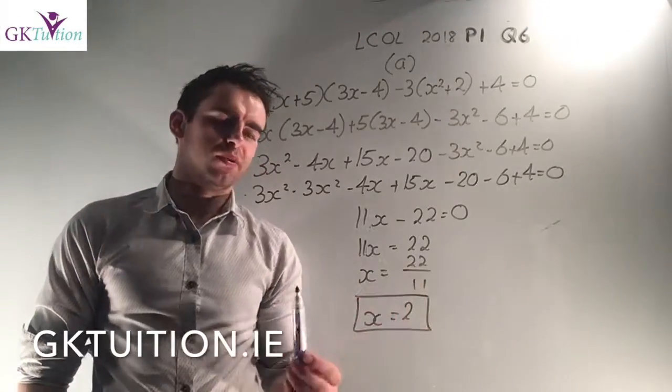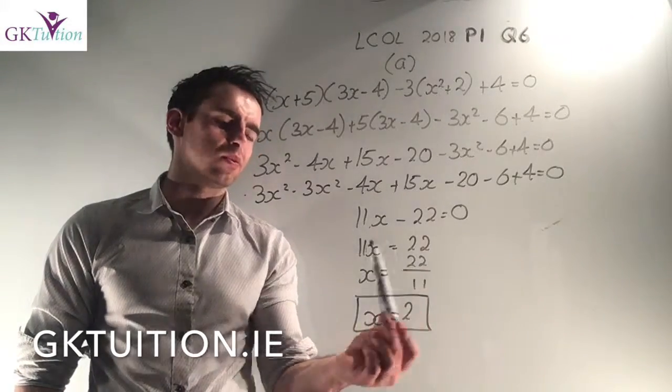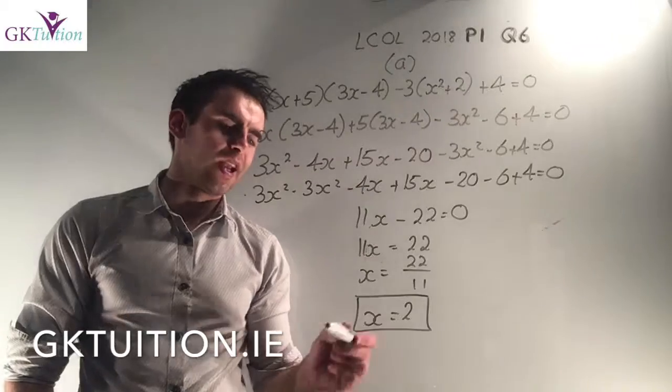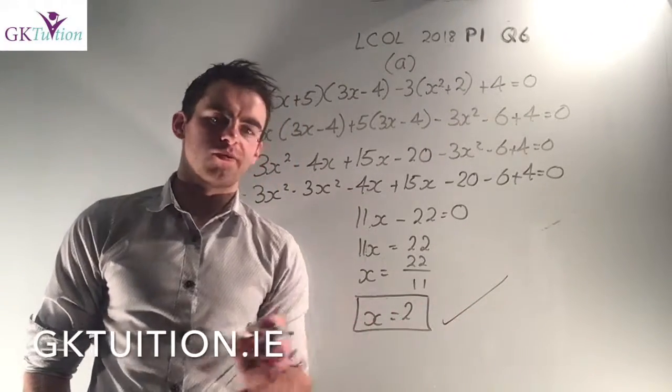Now I've got 11x - 22 = 0. So add 22 to both sides and I get 11x = 22. Divide both sides by 11 and I end up with x is equal to 2. So the full marks there are just going for your x = 2.